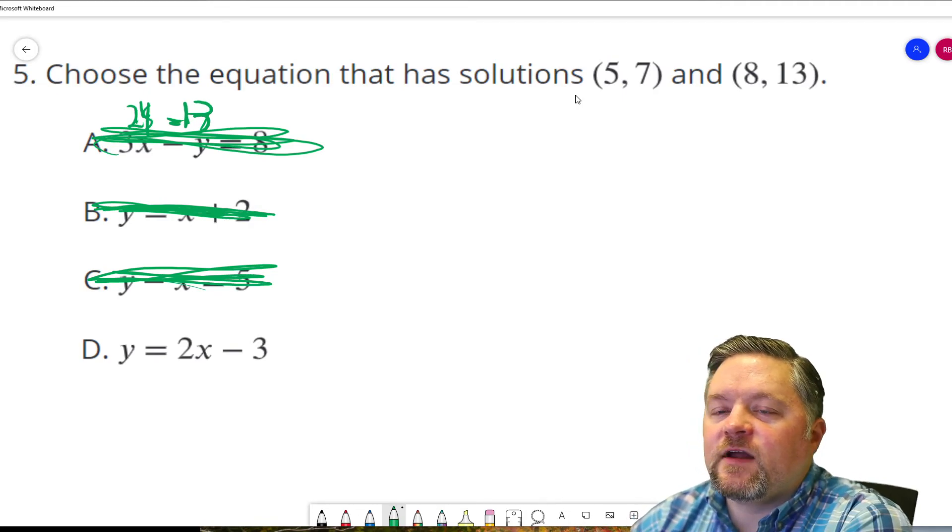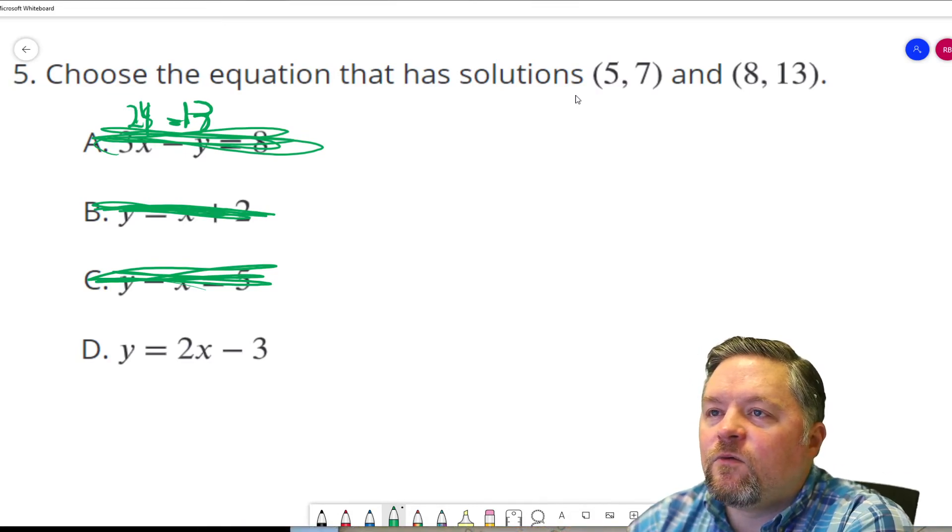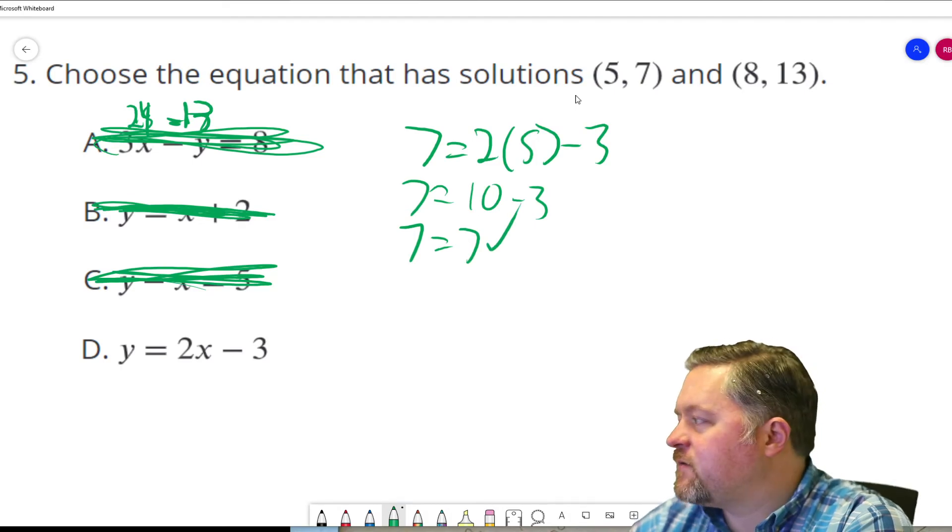I'll even write both of these out to make extra sure we got the right one right. Y, the first point, 5, 7. Equals 2 times 5 minus 3. 7 equals 2 times 5 is 10. Minus 3. 7 equals 7. That one worked.